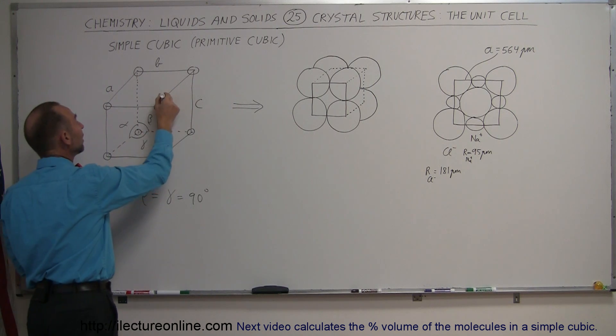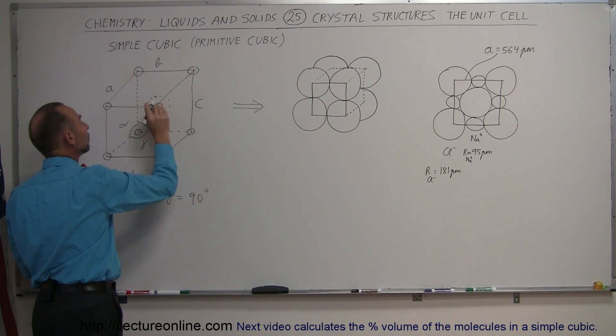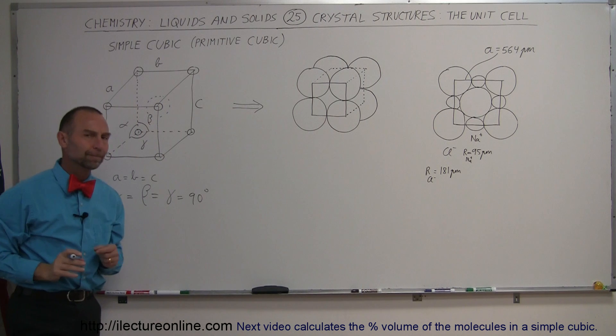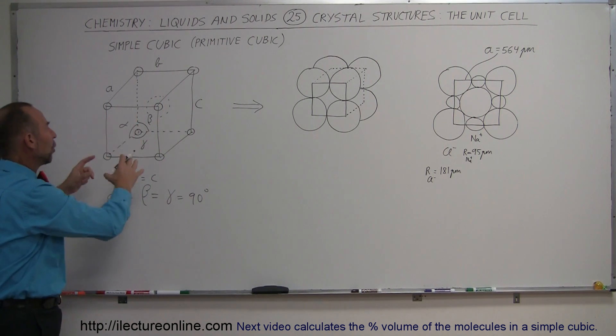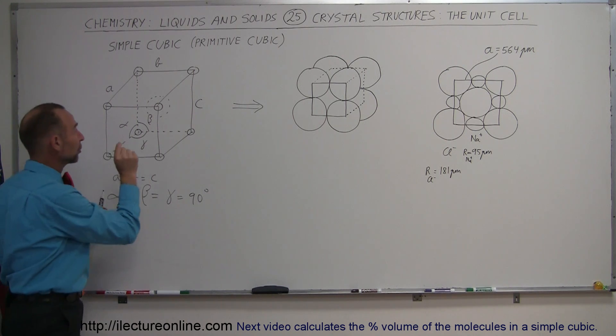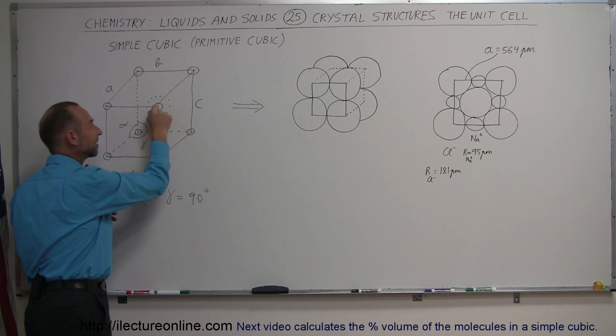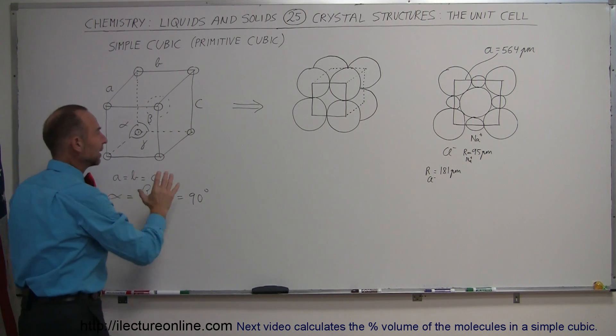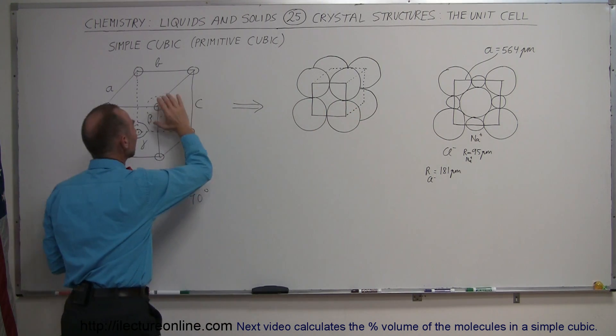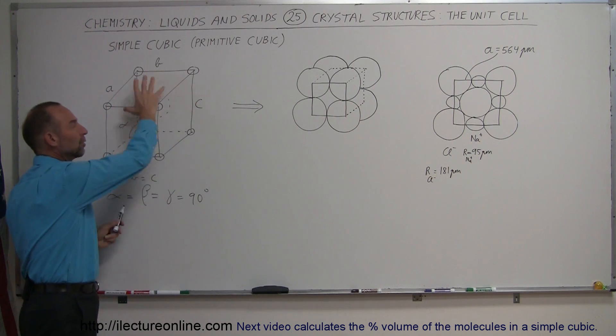For example, how much of this particular atom is part of this particular unit cell? And so you may say, isn't the whole atom part or the whole ion part of that cell? No, that's not exactly true, because what we're doing here is putting the corner right at the center of that atom. Of course, in reality, it's more like this rather than this, but sometimes it's easier to see when we draw it out like that.